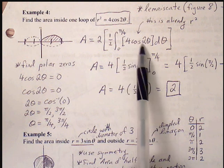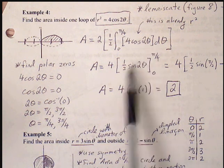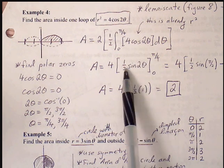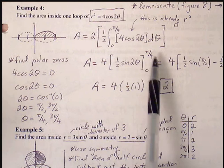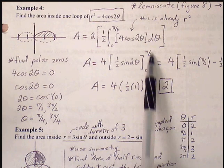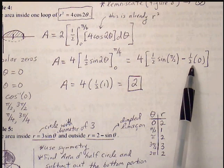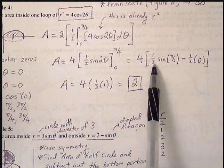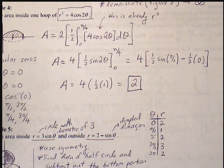We go through u-substitution: 2 theta produces a factor of one half. Cosine becomes positive sine. Evaluating between the bounds, the upper bound gives one half times sine of pi over 2 and the lower bound gives 0. Sine of pi over 2 is 1, and one half times 4 is 2. So our area is simply 2.